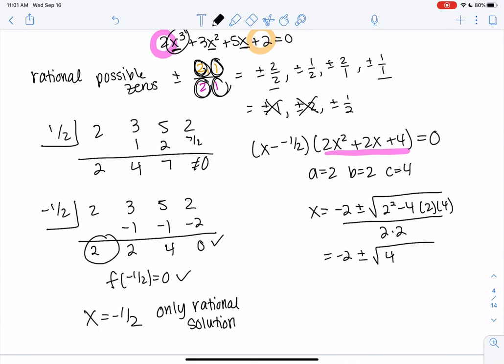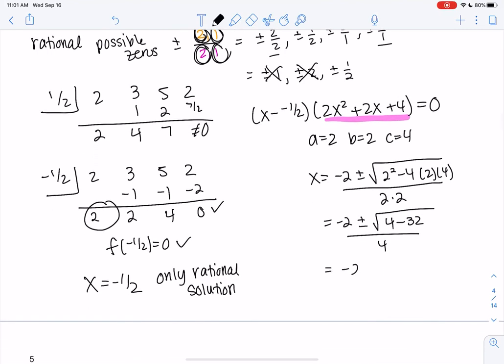We get 4 minus, what's that, 4 times 2, 8, 6, no, 32. All over 4. 4 minus 32 is negative 28. So this is not a real solution. So we're done.